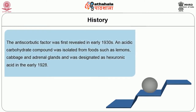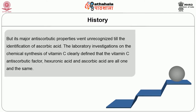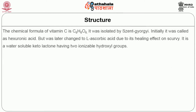The antiscorbutic factor was first revealed in the early 1930s. An acidic carbohydrate compound was isolated from foods such as lemons, cabbage and adrenal glands, and was designated as hexauronic acid in the early 1928. But its major antiscorbutic properties went unrecognized until the identification of ascorbic acid. Laboratory investigations on the chemical synthesis of vitamin C clearly defined that vitamin C, antiscorbutic factor, hexauronic acid and ascorbic acid are all one and the same.